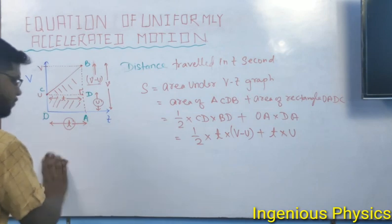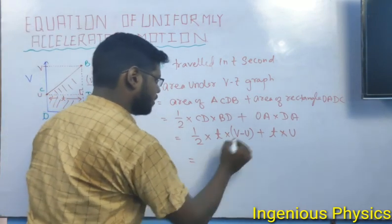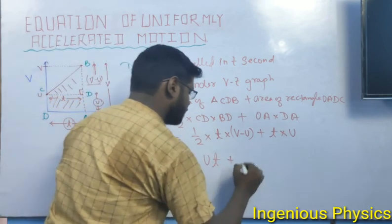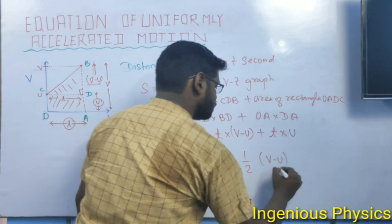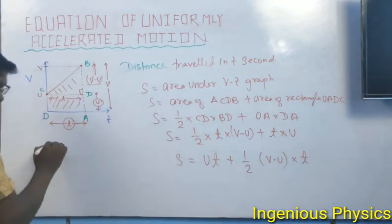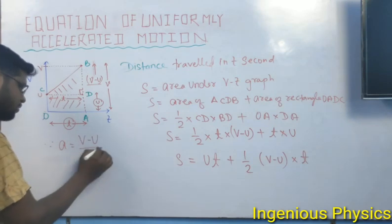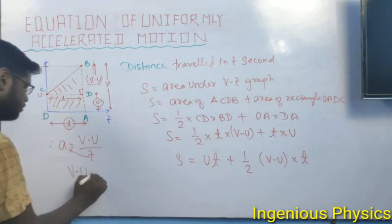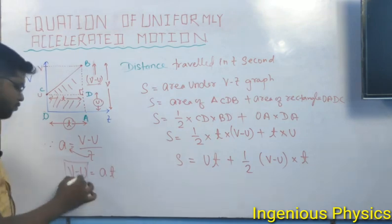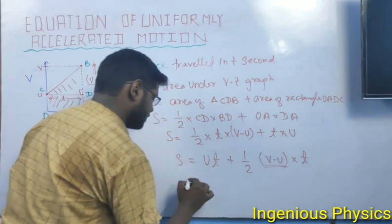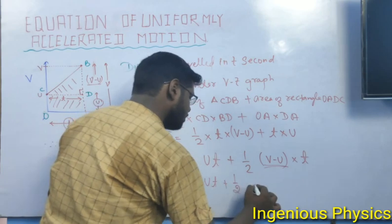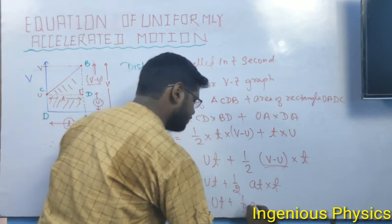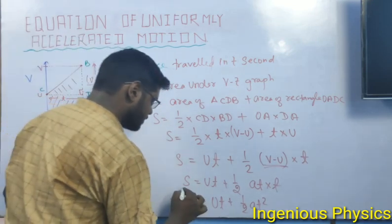CD represents T, BD represents V minus U, OA represents time T, and DA represents U. So we get S equals half times T times (V minus U) plus U times T. Since acceleration A equals (V minus U) divided by T, we substitute V minus U with AT. Therefore S equals UT plus half AT squared. The second equation is proved.